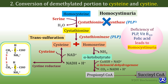Deficiency of pyridoxal phosphate (vitamin B6), vitamin B12, and folic acid all lead to homocysteinuria. Pyridoxal phosphate is required for conversion of homocysteine to cysteine, while vitamin B12 and folic acid are required for regeneration of methionine from homocysteine. If all these vitamins are deficient, homocysteine cannot be regenerated to methionine or converted to cysteine, resulting in elevated homocysteine excreted in the urine — homocysteinuria.